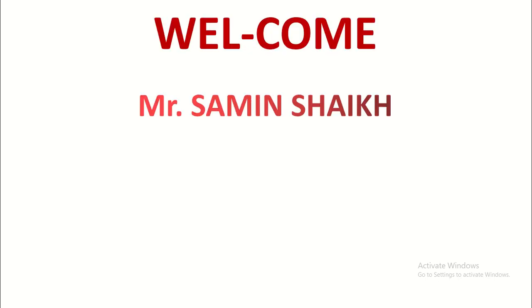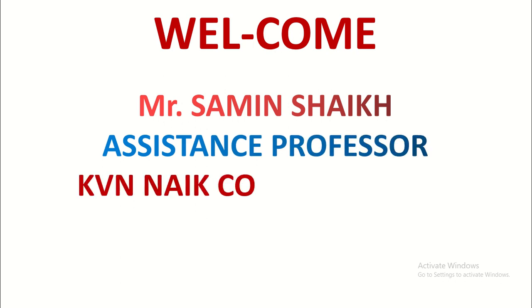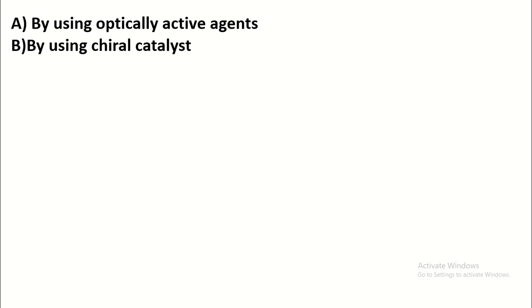Hello friends, welcome once again to my YouTube channel. I am Samin Sheikh, working as an assistant professor at KVN Night College, Nasik. In the last lecture we focused on the formation of optically active compounds using optically active agents. Now in this video I will focus on the formation of optically active compounds using optically active reactants — meaning chiral reactants. We know that if the reactant is optically active, then the product formed is also optically active, because the reaction takes place through a diastereomeric transition state.